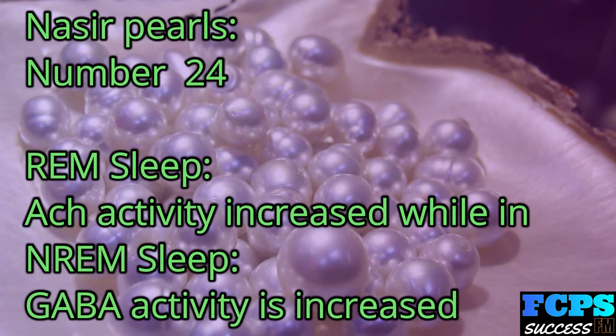Nasir Pearl number 24: In REM sleep, acetylcholine (ACh) activity is increased. In NREM sleep, GABA activity is increased.